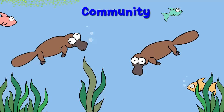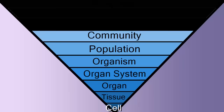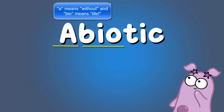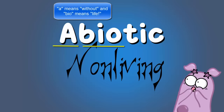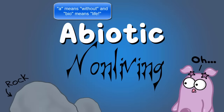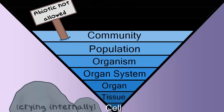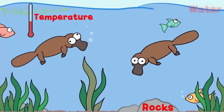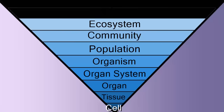A community includes many populations, but it does not include abiotic factors. Abiotic factors are factors that are non-living, like rocks. Abiotic factors are not considered in the community level — just biotic factors. Biotic factors, on the other hand, are living. When abiotic factors are considered — such as rocks, the temperature of this environment, the water — and the biotic factors, such as all the organisms we mentioned before, we now have an ecosystem.